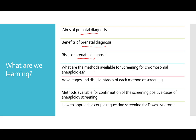We will cover the methods available for screening of chromosomal aneuploidies, which is the mainstay of prenatal diagnosis at the moment, and then comparatively discuss the advantages and disadvantages of each method. After screening we need to confirm the diagnosis — whether the patient has trisomy 21 or Down syndrome or Edwards syndrome — using certain diagnostic or confirmatory tests, and then how to handle a request for Down syndrome screening.